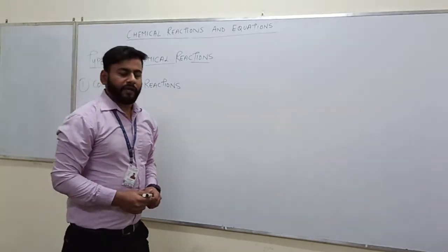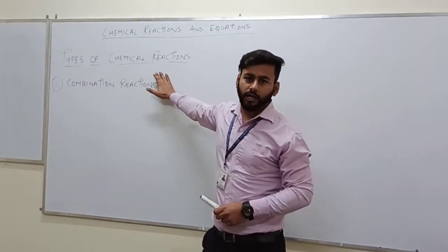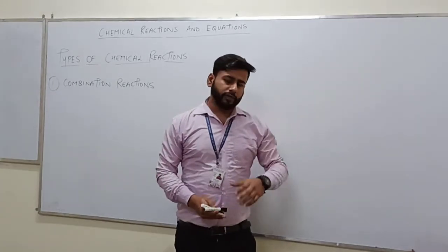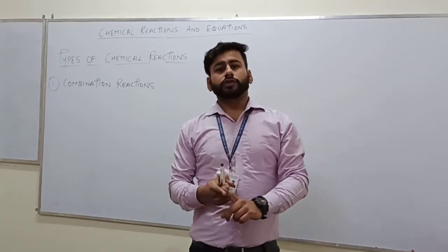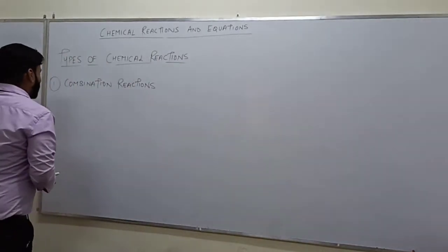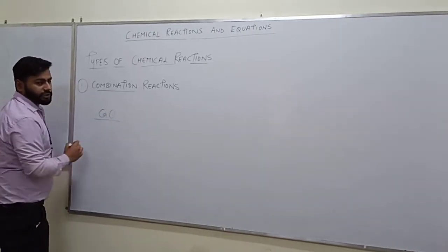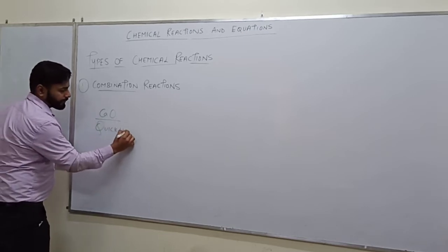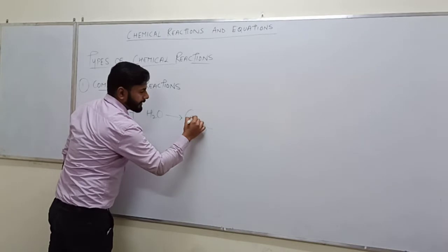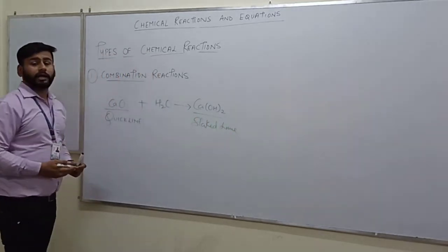Now that we have discussed the effects of chemical reaction, we will also discuss the basic types of chemical reaction. There are four types. The first one is combination reaction. Let us take the example of calcium oxide, which is also known as quicklime. When we will react it with water, it will form slaked lime. Calcium oxide is the chemical name and quicklime is the common name of CaO. Calcium hydroxide is the chemical name and slaked lime is the common name of the product.